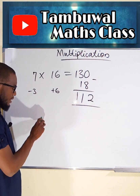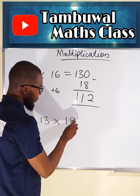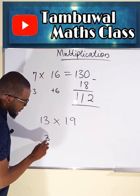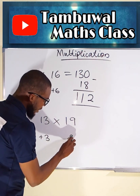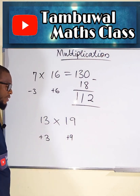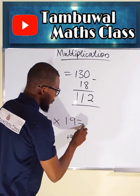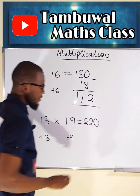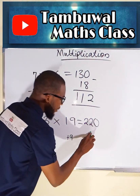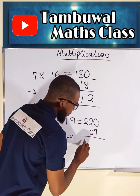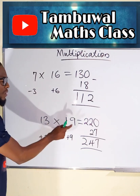Now let us take the last one. We want to multiply 13 by maybe 19. 13 is 3 greater than 10, while 19 is 9 greater than 10. This plus this, or this plus this, will give us 22. Add an extra 0. This time, 3 times 9 is 27. Then we add 27 here, and this is 247 after multiplying 13 by 19.